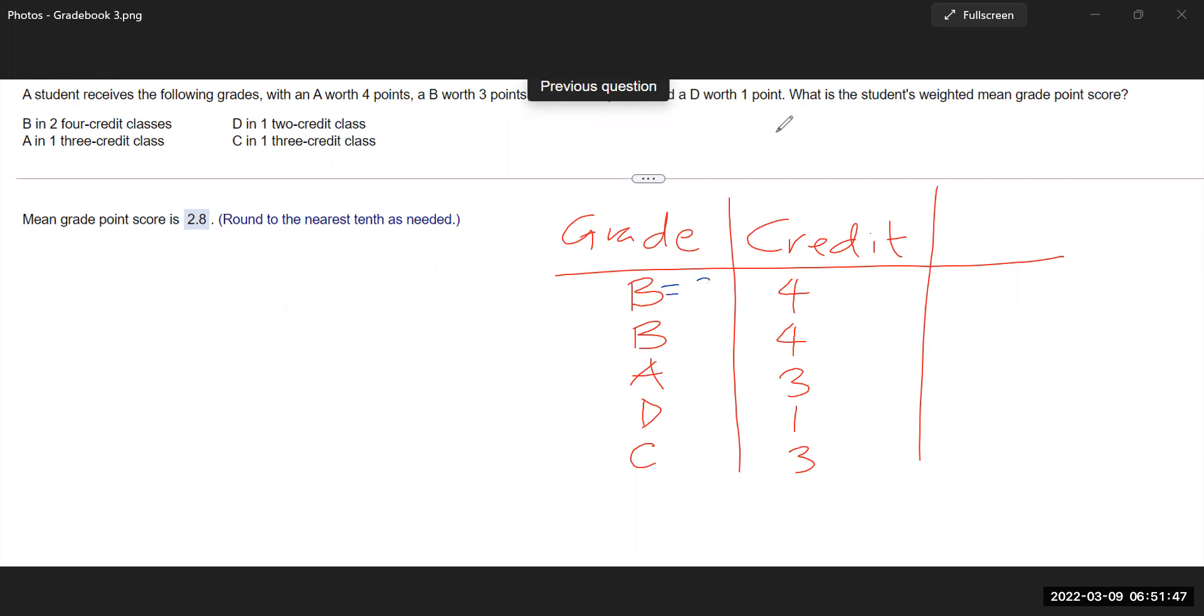So we know that B is three. And B is three. A is worth four points. One. And then C is two.